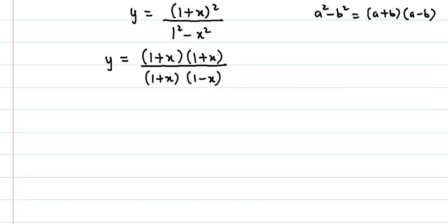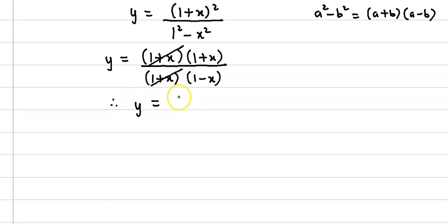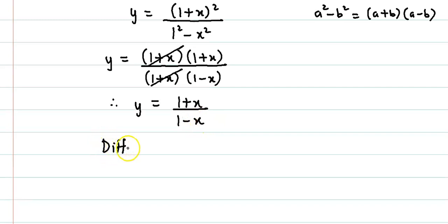1 plus x the whole square could be written as 1 plus x into 1 plus x, divided by 1 plus x into 1 minus x. If we cancel out the common factor, 1 plus x cancels with 1 plus x. So we have y is equal to 1 plus x upon 1 minus x. Now we differentiate with respect to x.